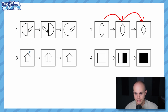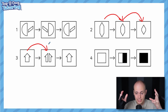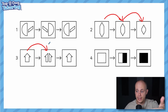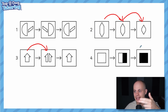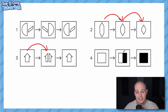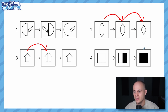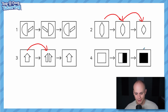Operation three is a bit like number one — applying it splits the shape in half vertically, and applying it again puts it back together. Change and then change back. Operation four is a bit like number two: the right-hand half of the shape gets shaded black, and if applied again, the left-hand half also gets shaded black, leaving an entirely shaded shape.